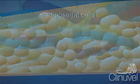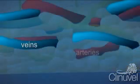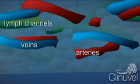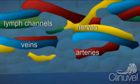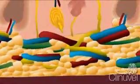At the base of the hypodermis and throughout the dermis are a series of veins, arteries and lymph channels, which collectively regulate blood flow and nerves to receive touch sensations. And all of this lies on top of muscle.